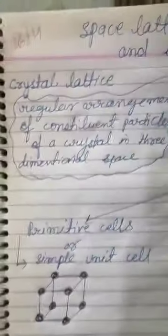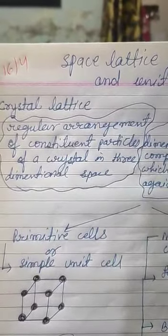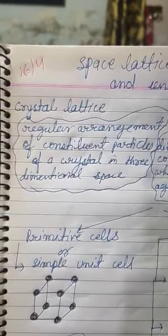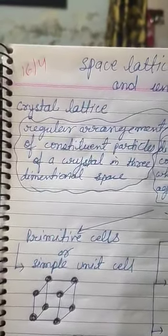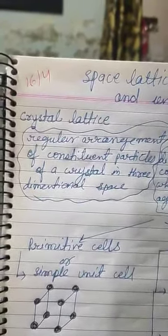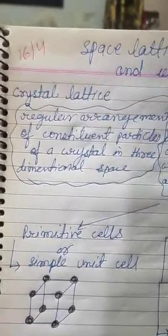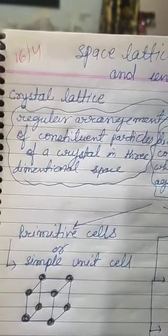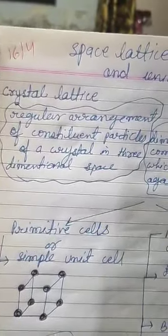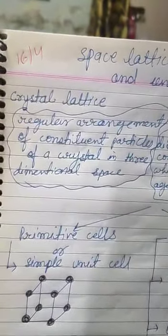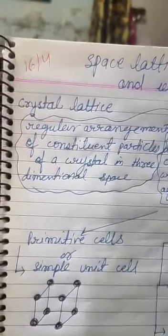Here we have to understand these two terms crystal lattice. Crystal lattice is defined as regular arrangement of the constituent particle of a crystal in three dimensional space. Any solid is made up of number of constituent particles and how these constituent particles are arranged will decide the type of crystal lattice. Regular arrangement of constituent particles of a crystal in three dimensional space. All these solids are having three dimensions.